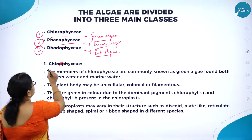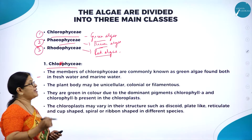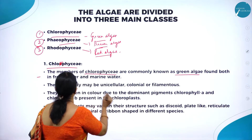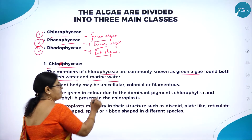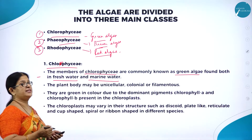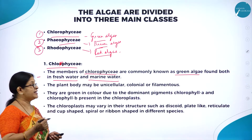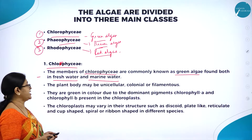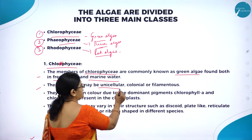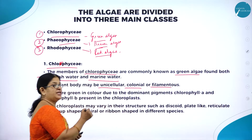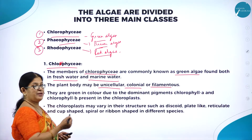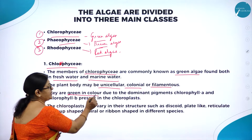Now let us start with the first class, Chlorophyceae. The members of Chlorophyceae are commonly known as green algae, found both in fresh water and marine water. The plant body may be unicellular, colonial, or filamentous — microscopic unicellular, found in colonies, or filamentous — and they are green in color.